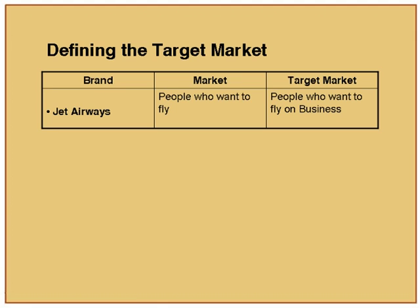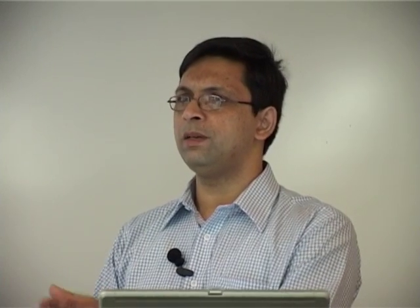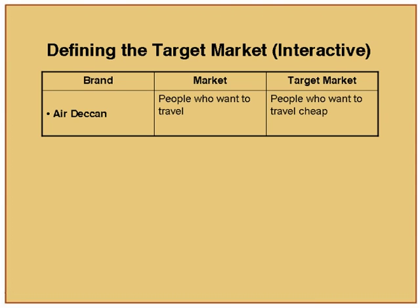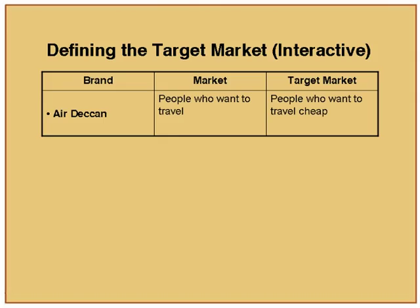Jet Airways — what is the market? People who want to fly. The target market is people who want to fly on business — the need is saving time. They also carry couriers, which could be a market similar to DHL, but that is a different business segment altogether. Air Deccan — now called Kingfisher Red — what is the market? People who want to travel. Their target market is people who want to travel cheap. This is just target market — we have to see what segments exist within.